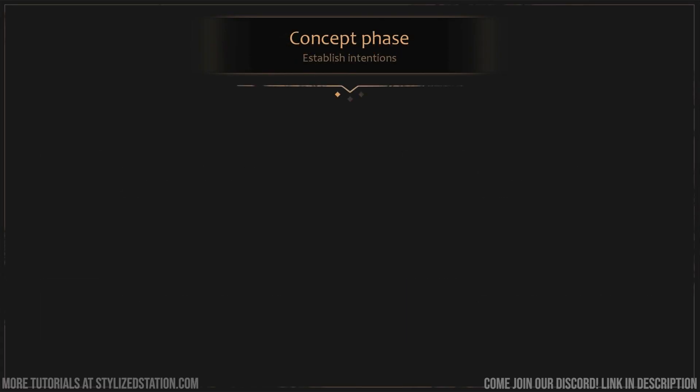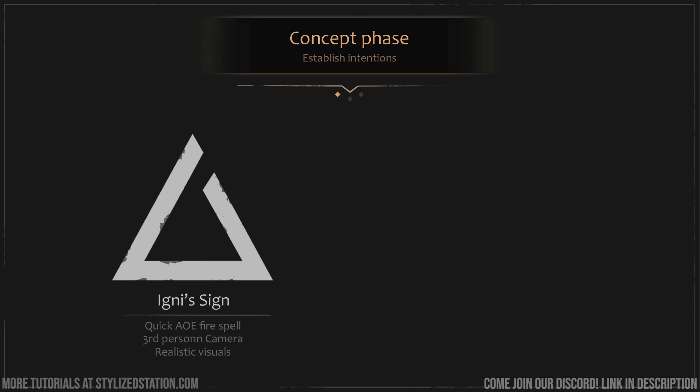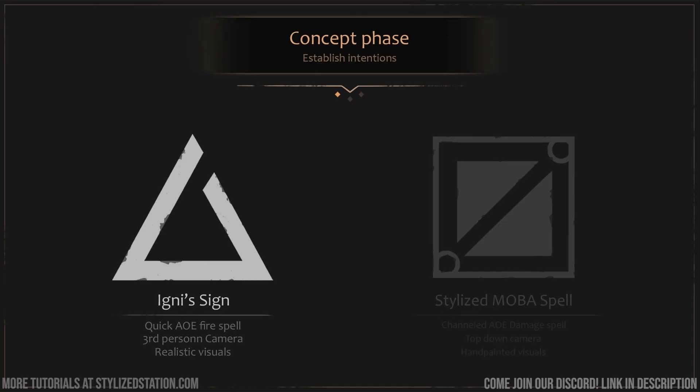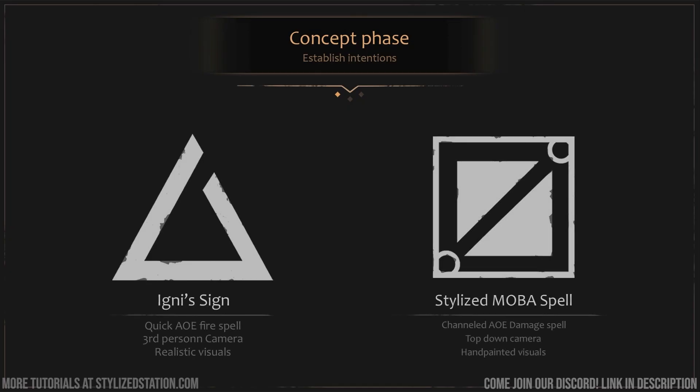I wanted to redesign the Ignis sign as a stylized MOBA spell. I had to rethink important elements such as structure, camera view, and artistic direction. Setting those directive lines helped me a lot and gave me a path to follow with clear intentions from the beginning to the end of the project.